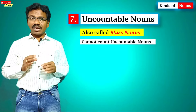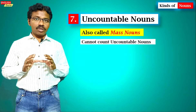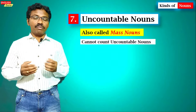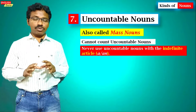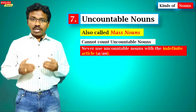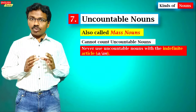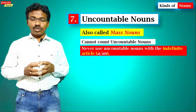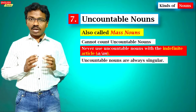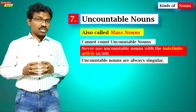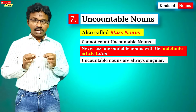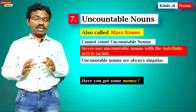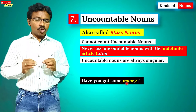The seventh kind is uncountable nouns, also called mass nouns. Whatever nouns we cannot count are called uncountable nouns — we cannot count them like one, two, three. One important rule: uncountable nouns should not be used with the indefinite articles 'a' or 'an.' Another key point: uncountable nouns are always singular — there is no plural form for uncountable nouns.